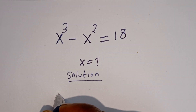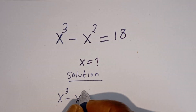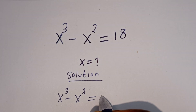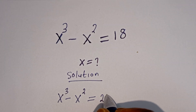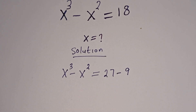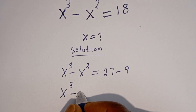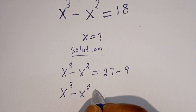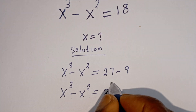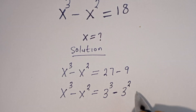We have S to the power of 3 minus S squared is equal to 18. This 18 can be written as 27 minus 9. So the right-hand side becomes 3 to the power of 3 minus 3 squared.